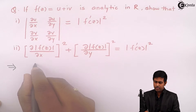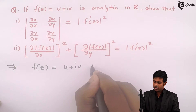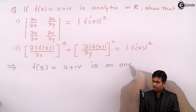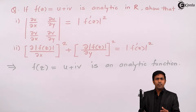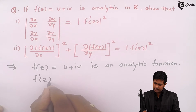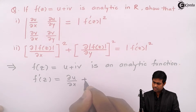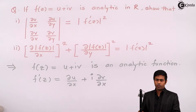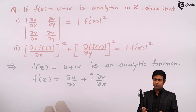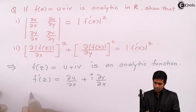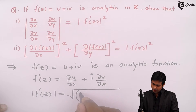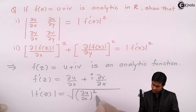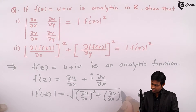It is given that f(z) = u + iv is an analytic function. Since f(z) is analytic, we know that its derivative f'(z) is given by the formula ∂u/∂x + i·∂v/∂x. We have four formulas to find the derivative of f(z) and I am using one of them. Since I want the modulus, let us find |f'(z)|, which is the square root of (∂u/∂x)² + (∂v/∂x)².